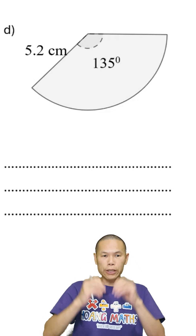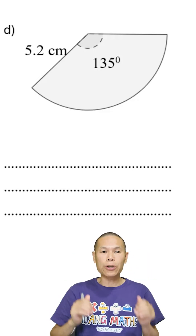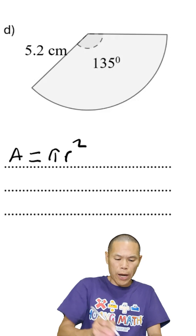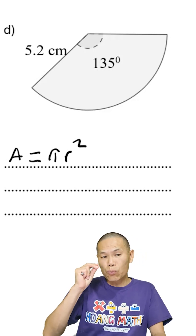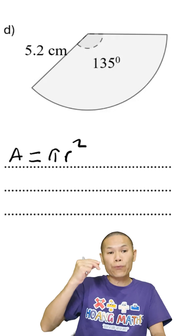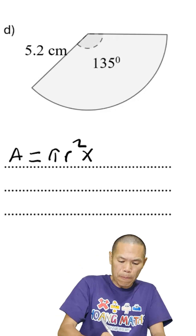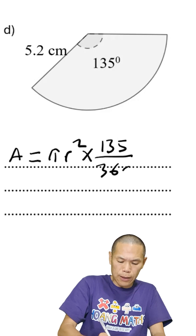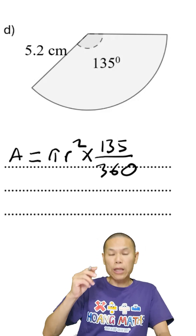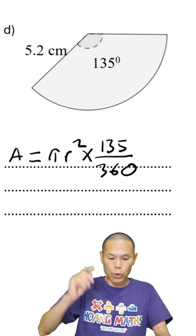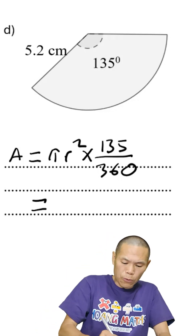So part D — it's a part of a circle, so the area of a circle A is π r squared. We just need 135 out of 360 degrees, a part of it, so we multiply by 135 out of 360. We know that the radius of this sector is 5.2.